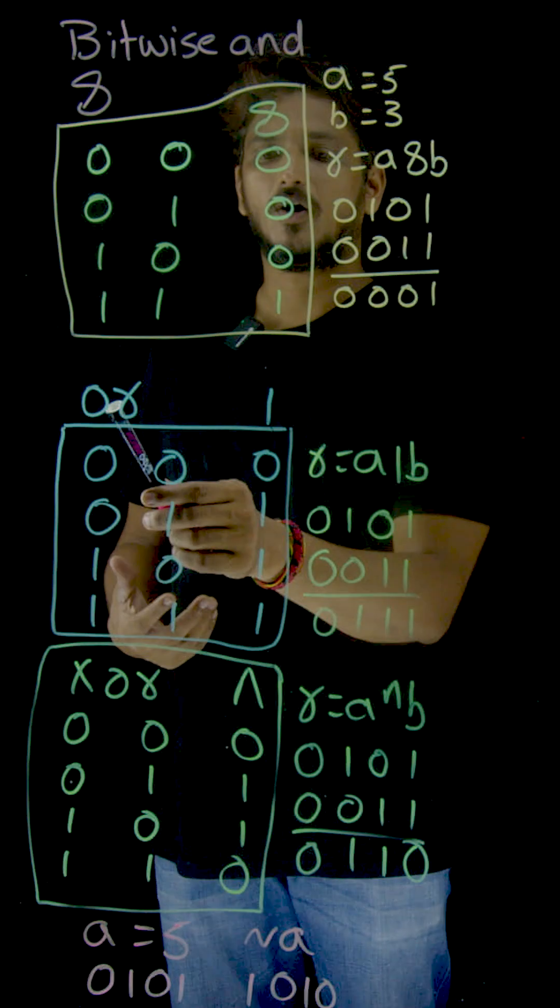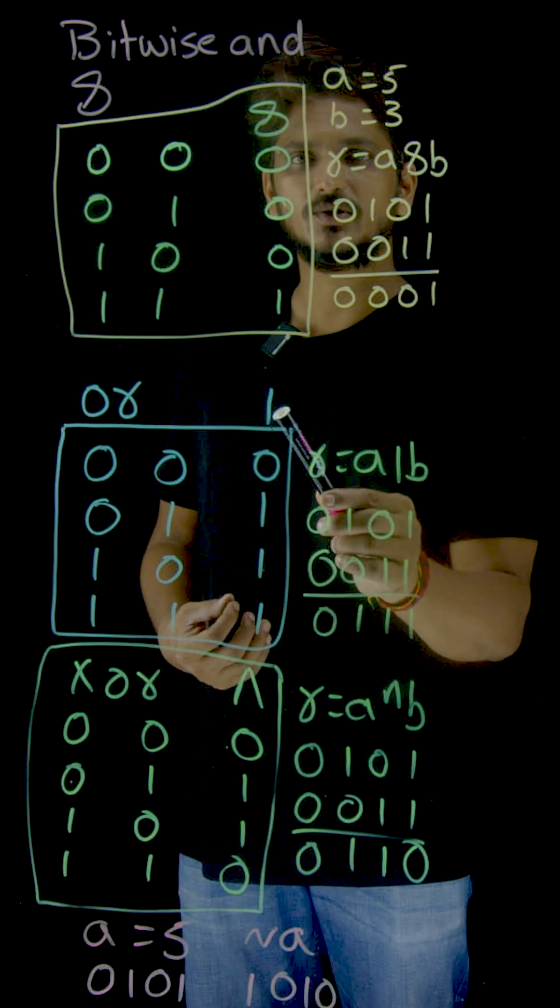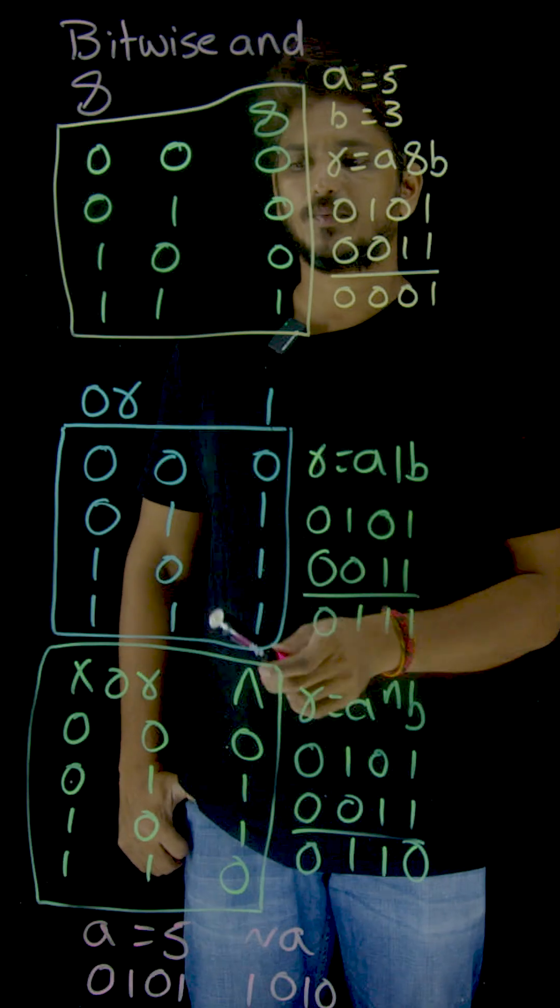Bitwise OR operator. The OR operator is given with this symbol. This is the symbol which we are going to use for the OR operator. So what happens in the OR operator?